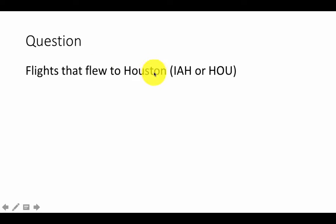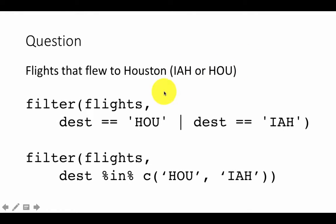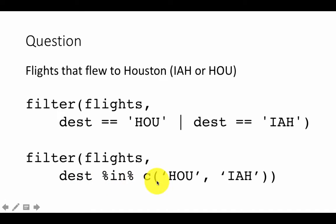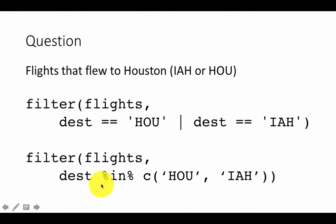How about filtering flights that flew to one of the Houston airports, with airport codes IAH or HOU? We can filter by destination: filter(flights, dest == 'HOU' | dest == 'IAH'). Alternately, a better way of writing this is filter(flights, dest %in% c('HOU', 'IAH')). Both are equivalent, but the %in% approach is more concise, especially when you have multiple OR conditions on the same column.